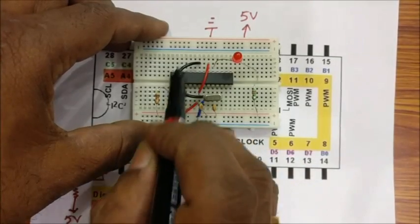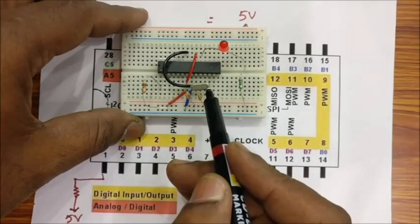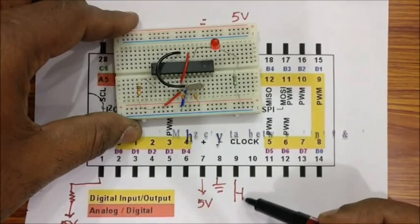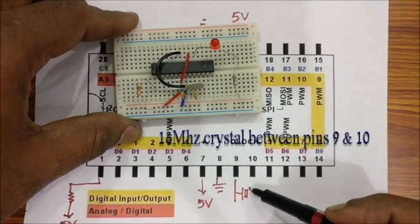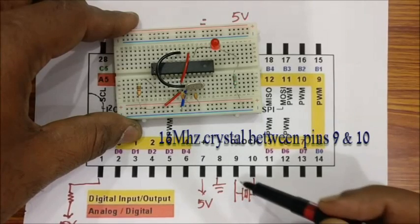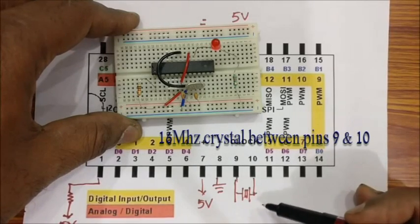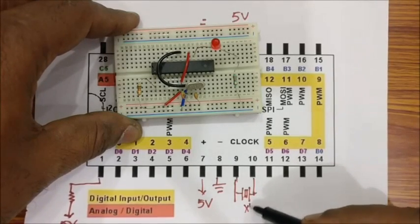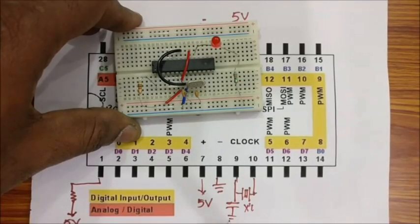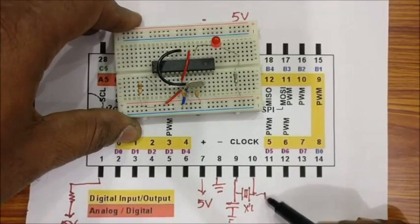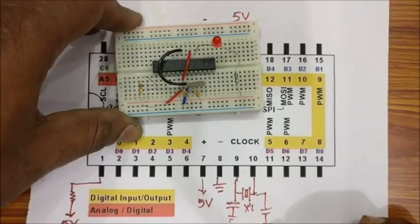A 16MHz crystal is connected between pin 9 and 10. And each pin is grounded with a 22PF disk capacitor. If the IC is a fresh one you can avoid this crystal. By factory default a fresh IC will be configured for internal clock operation.